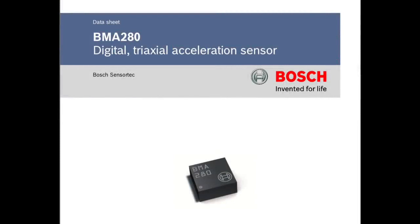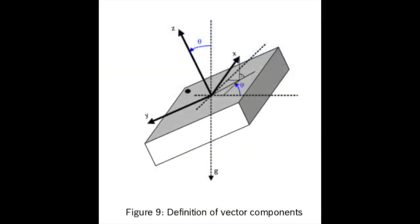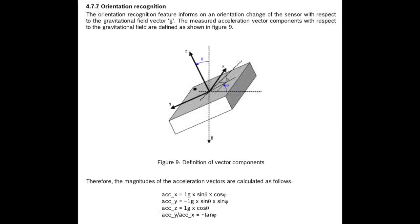Well folks, say hello to my little friend, the BMA-280 Digital Triaxial Acceleration Sensor from Bosch. One of the many properties of this rather remarkable little chip is that it can sense the direction of gravity and use that to determine its orientation in space. It does that using a little bit of math, but the bottom line is it always knows where the center of the Earth is.